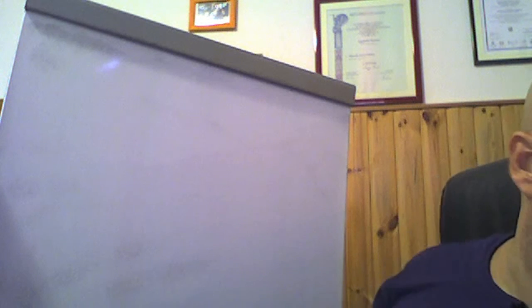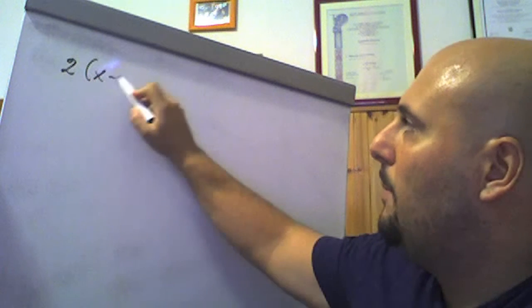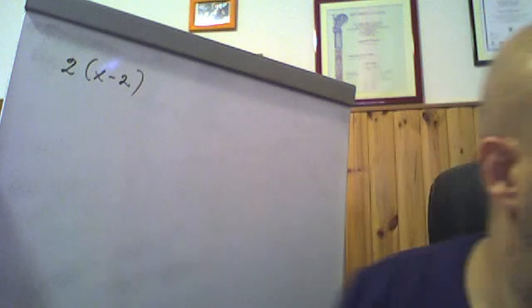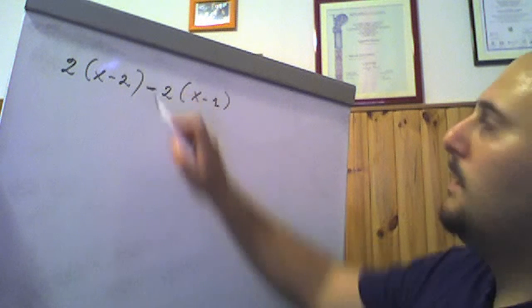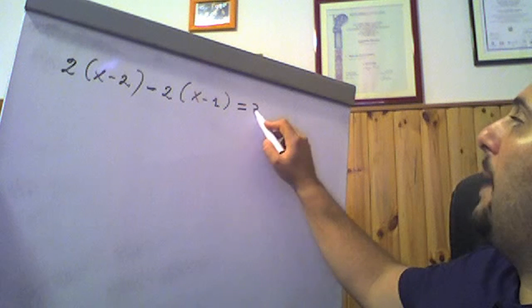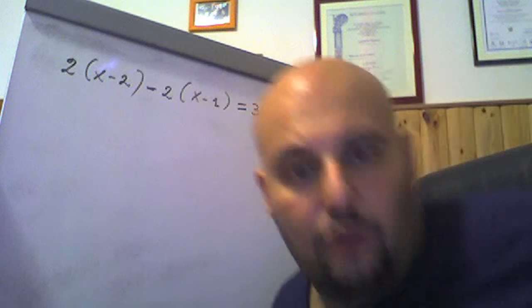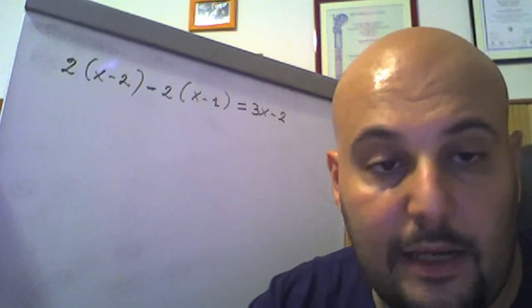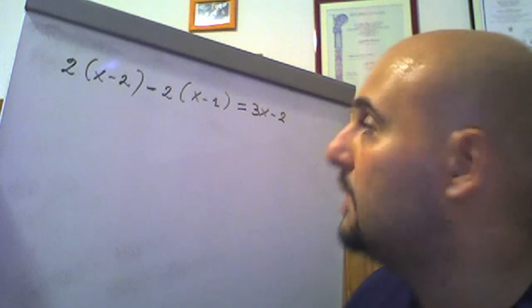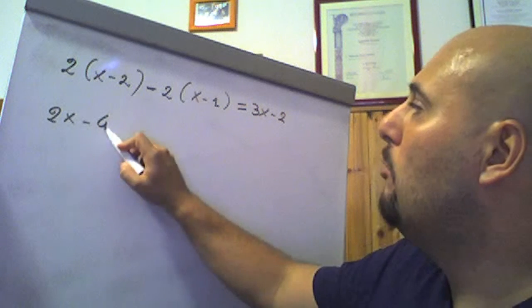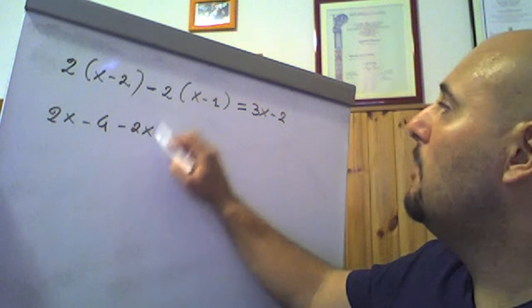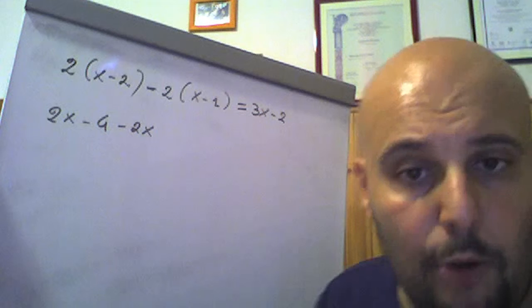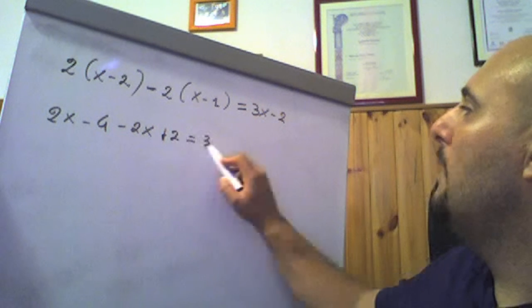Let's look at another example: 2(x − 2) − 2(x − 1) = 3x − 2. We must naturally solve the steps using the algebraic properties we know. So we multiply the 2 by the binomial (x − 2): 2·x = 2x, 2·(−2) = −4. Then we multiply (−2) by the binomial (x − 1): −2·x = −2x, (−2)·(−1) = +2, since minus times minus is plus. Equals 3x − 2.